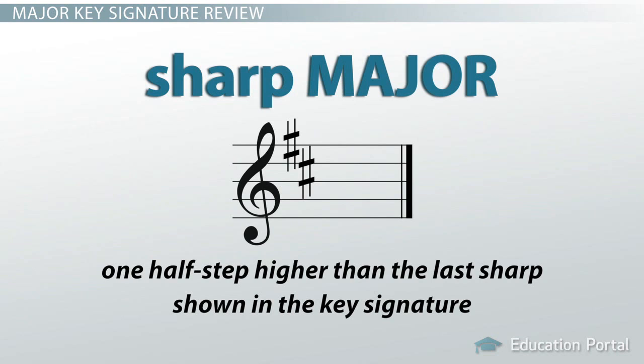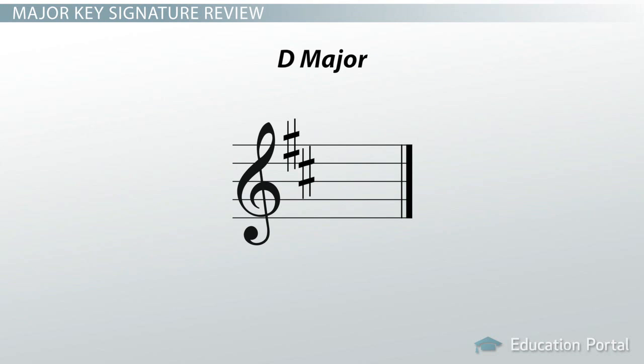That means that this example, where C sharp is the last sharp shown, signifies the key of D major, where D is the home note, or tonic.